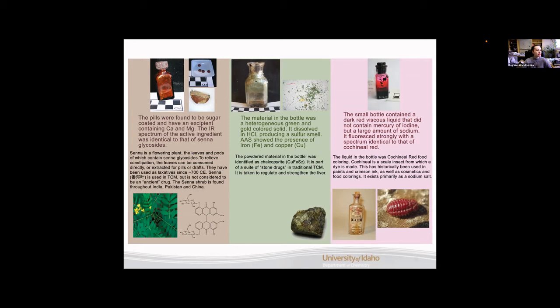Our second artifact was this vial here containing a heterogeneous green and gold mixture of these flecks. When dissolved in hydrochloric acid, it produced a sulfur smell, which indicates the presence of sulfur in the material, and atomic absorption spectroscopy showed the presence of both iron and copper. So this powdered material in the bottle was identified as chalcopyrite. You can see a picture of a solid form of chalcopyrite in the bottom right hand corner, and you can see the varying gold and green colors in there that are represented in those flecks. Chalcopyrite is in a suite of stone drugs that are traditionally used in TCM, and it is taken to regulate and strengthen the liver.